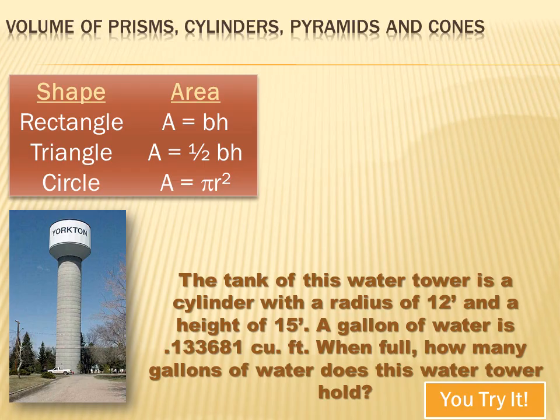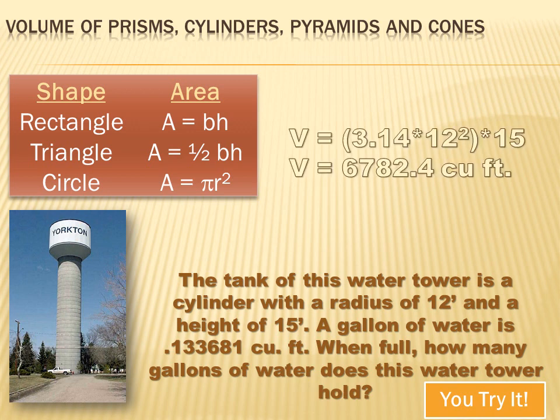So the volume of that water tower, which is 12 foot in radius with a height of 15 feet, would be 3.14 times 12 squared times the height of 15 feet. Or the volume equals 6,782.4 cubic feet.